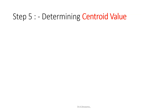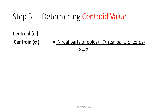Now we are going to determine the centroid value. The centroid σ is calculated as: (sum of real parts of poles minus sum of real parts of zeros) divided by (P - Z). Here, the real parts of the poles are 0, -3, -3, and the real part of the zero is -4. Therefore the centroid σ = (0 - 3 - 3 - (-4)) / 2 = -1. The centroid is the point where the asymptotes intersect the real axis.